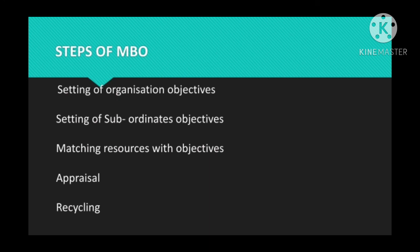These are the different steps or process of MBO. To summarize: first, setting of organizational objective — in the organization, top authority sets the objective and it moves down to the lowest level. Second, setting of subordinates' objectives — individual duties are assigned from the top level down.